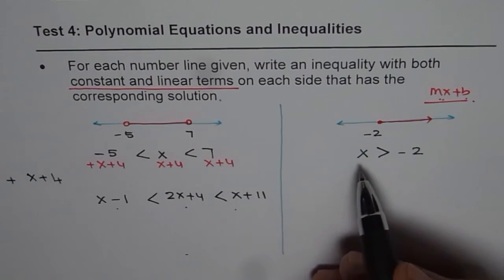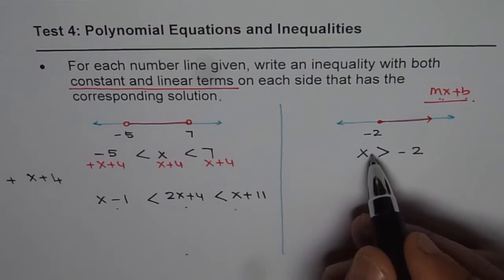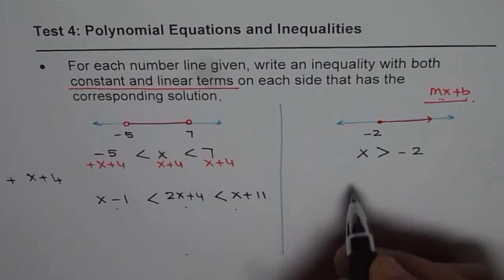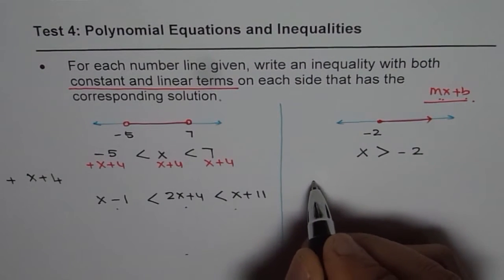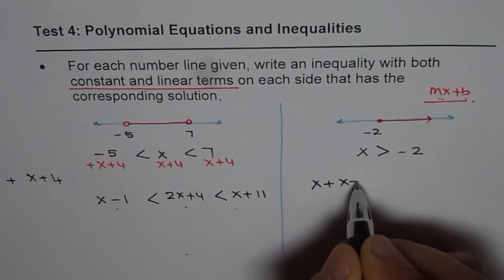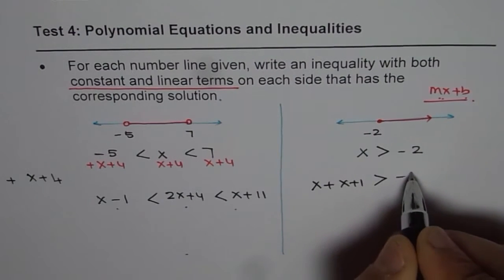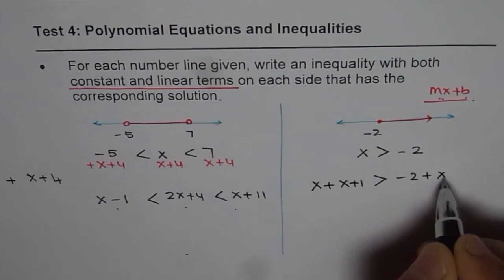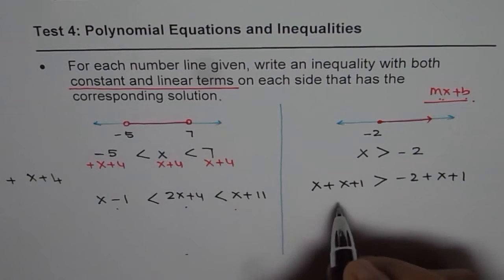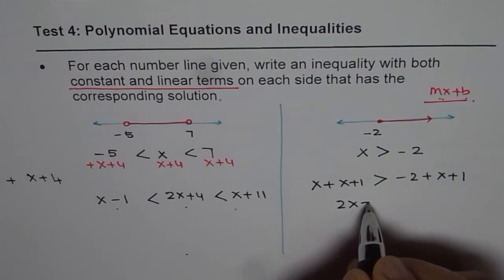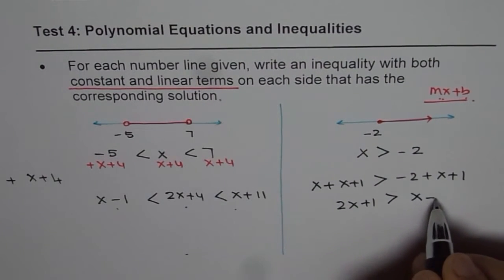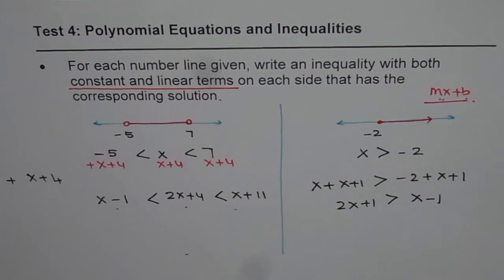In this case, again, let's add something. We can add x + 1 again. So, if I add x + 1, what do I get? I'm adding just x + 1 on each side. So, I'm adding x + 1. I get 2x + 1 is greater than x - 1. So, that is the solution.